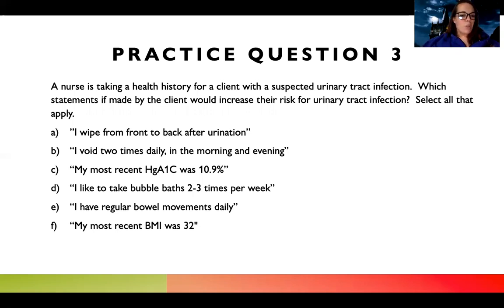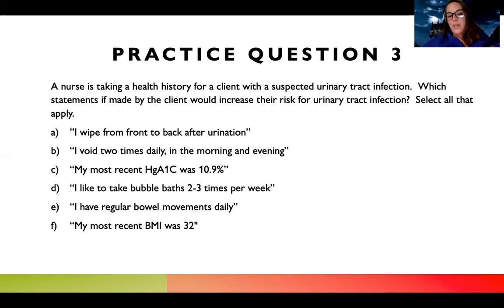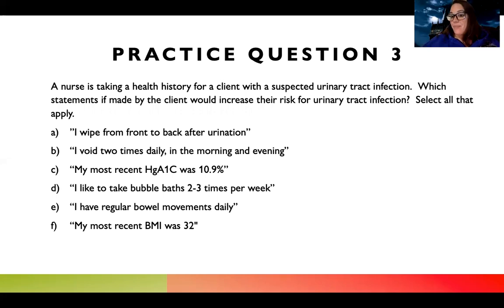Choice C says 'my most recent hemoglobin A1c was 10.9%.' One of these professors got to bring up previous topics. If I remember diabetes, hemoglobin A1c we really like around five to six. So 10.9 is high. This answer choice is asking whether having hyperglycemia or diabetes puts me at higher risk for UTIs. If I remember anything about diabetes, diabetics are more at risk for infection and have less mobilization of their immune defense. So yes, that does increase their risk for a urinary tract infection — true.